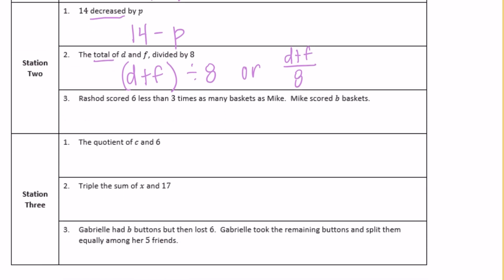Number three, Rashad scored six less than three times as many baskets as Mike. Mike scored b baskets. Rashad scored six less, so that's subtracting, three times as many baskets as Mike, that would be b, so 3b. And then six less: 3b minus 6.